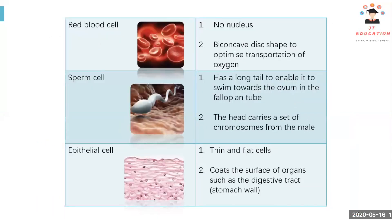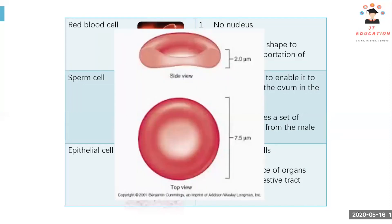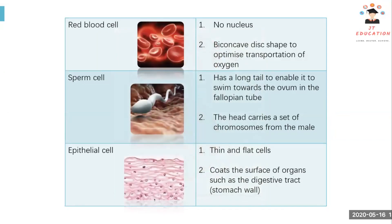Red blood cells are a component of our blood. Red blood cells have no nucleus and have a biconcave disc shape — similar to a donut. The function of red blood cells is to optimize the transport of oxygen.